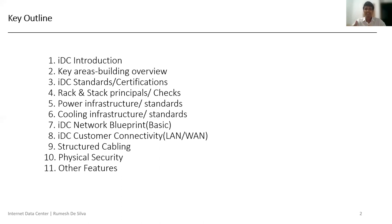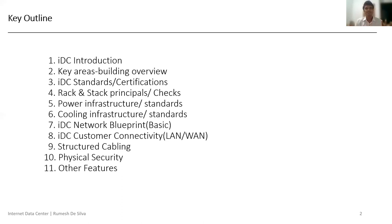And how the data center network is built — we are talking about the blueprints and examples. IDC customer connectivity — from the customer to the WAN network. We will talk about how to build a structured cabling architecture and how we can maintain structured cabling in the data center. And the physical security — most important thing.